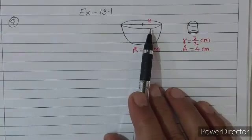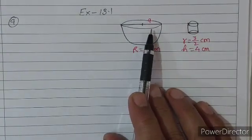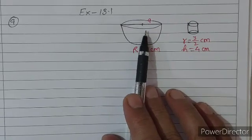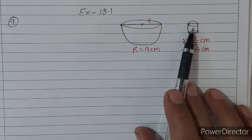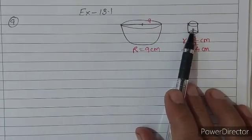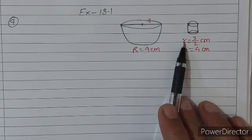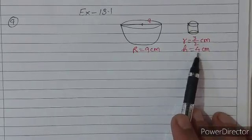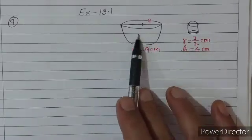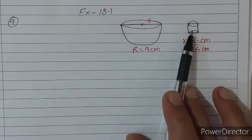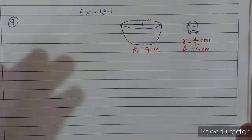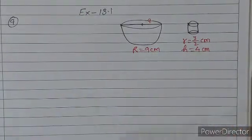इस liquid से इन छोटी-छोटी bottles को भरना है जिसकी radius 3/2 cm है और height 4 cm है। तो इस liquid से ऐसी कितनी बोतलें भर जाएंगी? हम यहाँ पर बहुत आसान तरीके से question को करने वाले हैं।